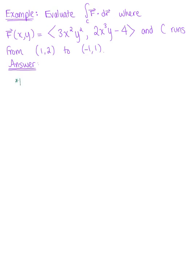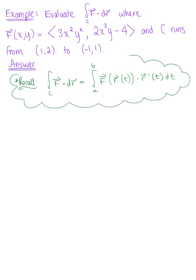Let's recall that a vector line integral over a curve C for computation purposes is redefined as the integral from a to b of the parametrized vector field, vector f of r(t) dotted with the tangent vector, dt. You can also check here to see if your vector field f is conservative, and if it's conservative, we can find a potential function and apply the fundamental theorem of calculus.